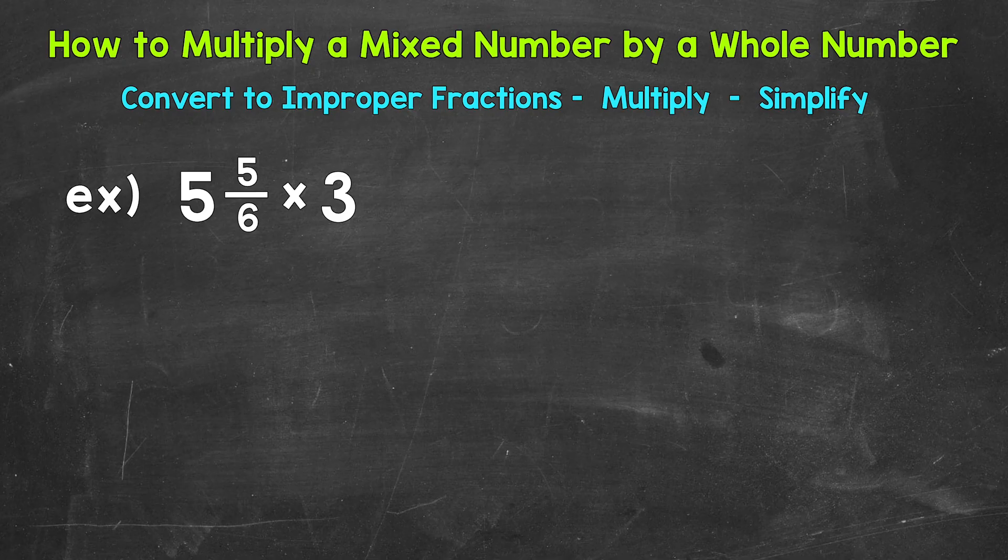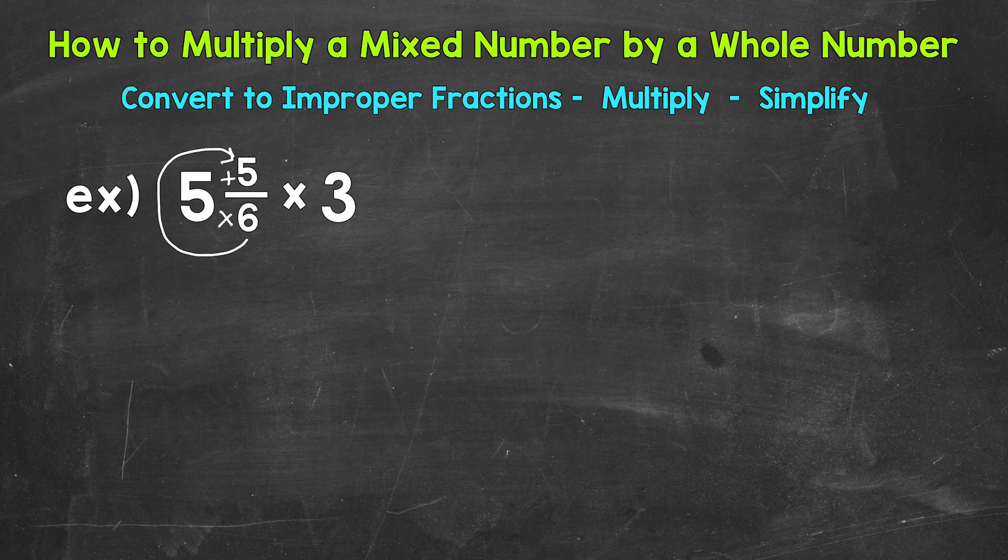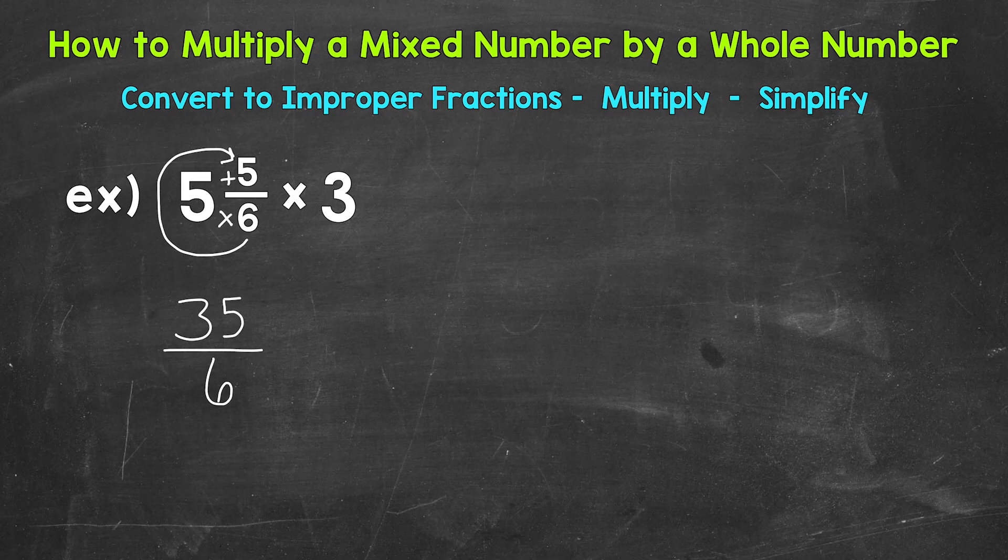We start at the bottom and work our way up. So we multiply and then add. We do our denominator times the whole number. So 6 times 5, which is 30, plus the numerator of 5. So 30 plus 5 is 35. That's the numerator of our improper fraction. We keep the denominator of 6 the same. So we get 35 over 6.